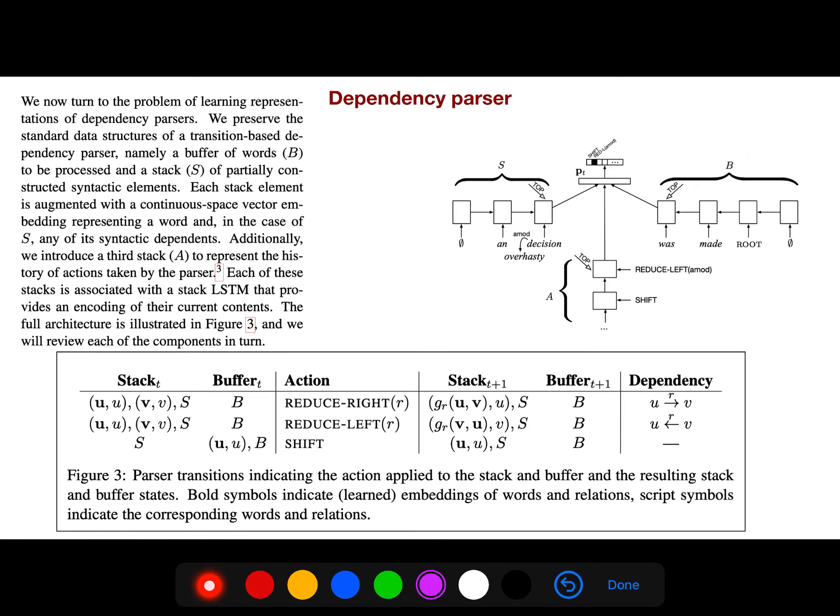We can use it for dependency parser. For example, in this paper everything is in buffer, so it goes well and finally we are in this state. At each time we have different elements in buffer and stack, and we have a different action. If it is reduce left or reduce right or shift, we have three actions here, and you can understand the dependency in your dependency parsing.